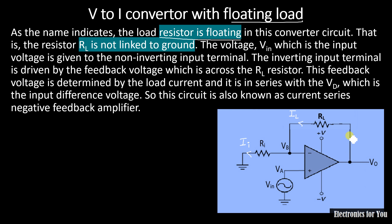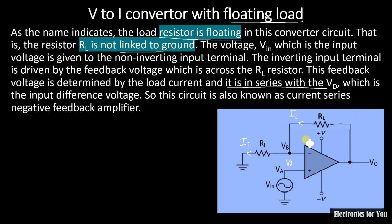The load resistance is connected as a feedback resistance and it is not connected to ground, and that's why it is called a floating load. The feedback voltage is determined by the load current and it is in series with VD, the differential voltage. Therefore this circuit is also known as a current series negative feedback amplifier. Now applying KCL at node B — this is the incoming current and this is the outgoing current.